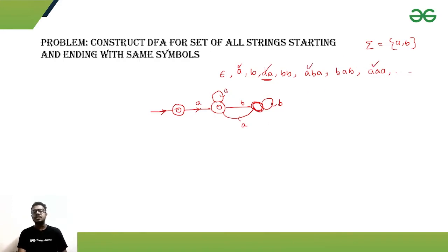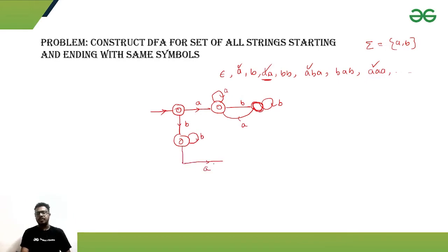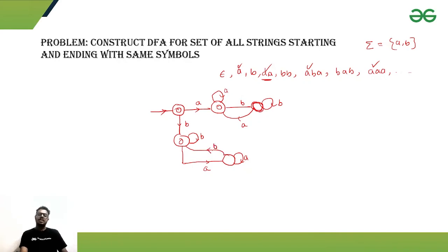For strings starting with 'b', we need to take another path. The same thing will happen — just the symbol will be different. For all strings starting with 'b', we can have multiple 'b's, but whenever we encounter an 'a', we go to a non-accepting state. Multiple 'a's can come there, but if we then get another 'b', that means the string is ending with 'b' — same as it started — so it comes back to the final state. This is our complete DFA for the given problem.